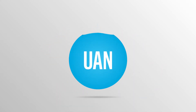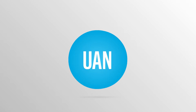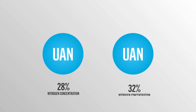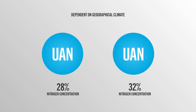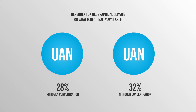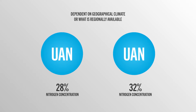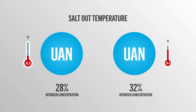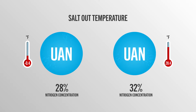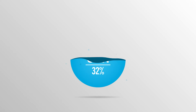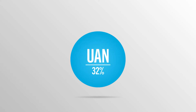But before we can establish the loss risk for UAN, we need to understand the composition of UAN. The two most commonly used compositions are 28% and 32%. What a grower uses can be dependent on geographical climate or what is regionally available. The key difference between the two compositions is the salt-out temperature — the point when crystals begin to form within a UAN solution. For this series, we'll focus on UAN 32% for our examples.